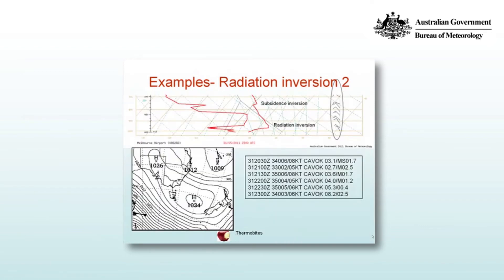Here we have another radiation inversion. You can see it's associated with a high in the southern Tasman reaching over Victoria. There's a very strong radiation inversion below a weak subsidence inversion, and the radiation inversion is very clear in both the dew point profile and the temperature profile. As described, the dew point should increase as the inversion strengthens, as the winds are weakened and can't mix the moisture through depth.